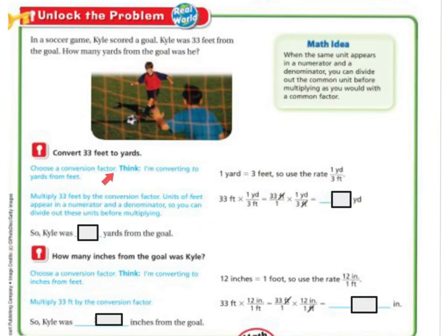So you're going to choose a conversion factor. First, I'm going to think yards to feet. If I multiply the 33 feet by the conversion factor, the units of feet appear in a numerator and denominator, so you can divide these units before multiplying. So we know that one yard equals 3 feet. So you're going to use the rate 1 over 3, so 1 yard for every 3 feet. Then I'm going to take the 33 feet and multiply it times 1 yard over 3 feet. Remember, whenever I have a whole number, I can just write a 1 underneath of it.